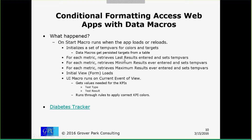The data macro retrieves the last results for each metric, the minimum results ever entered, the maximum results ever entered, and sets the TempVars. Then the form or view loads, and the UI macro runs on the current event of the view. It uses the current value to set a variable for the test type — what type of test am I looking at, and what is the result that goes with that particular test on that particular date and time? Then it runs through a set of rules in the macro to apply the correct colors.